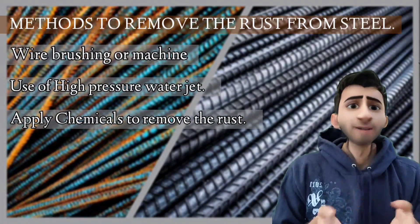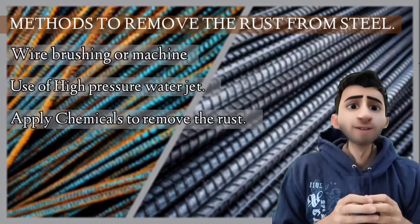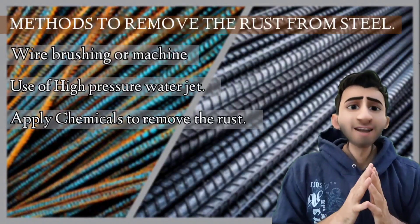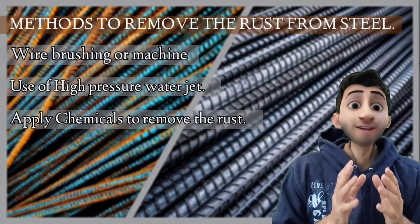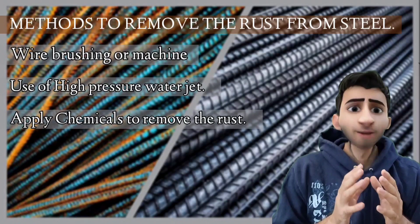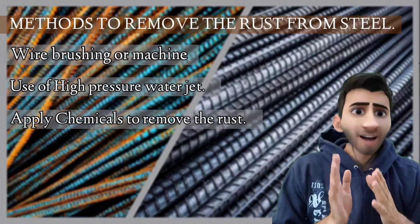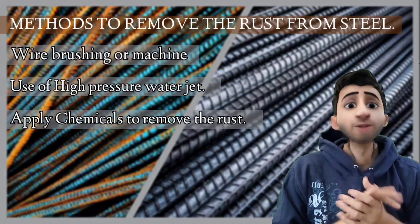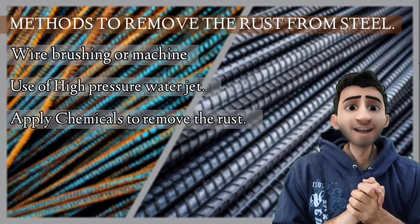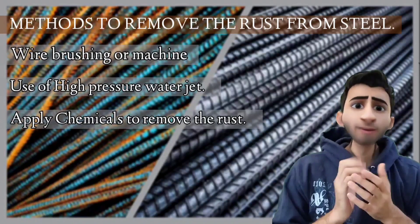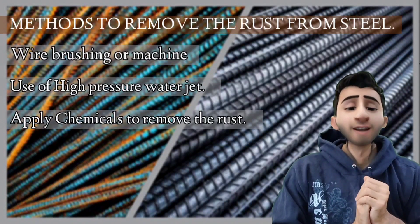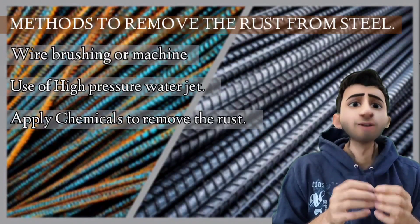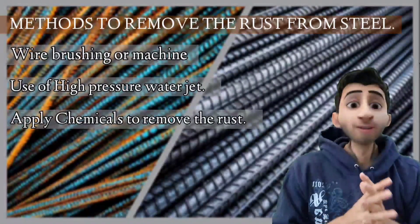So these three are the main methods to clean rusty steel: wire brushing, using a high-pressure water jet, and applying chemicals on the rusty steel. That's it for today's lecture. If you are new to my channel, please subscribe and press the bell icon for more updates. Thank you so much.